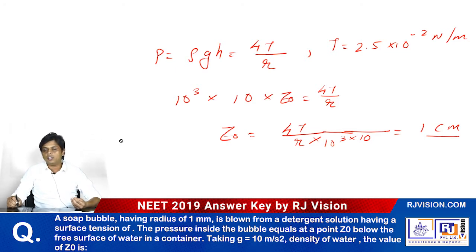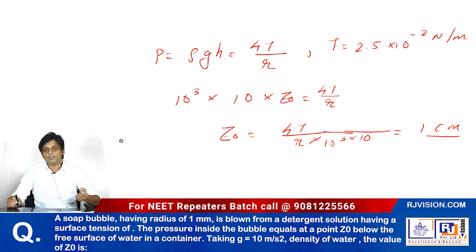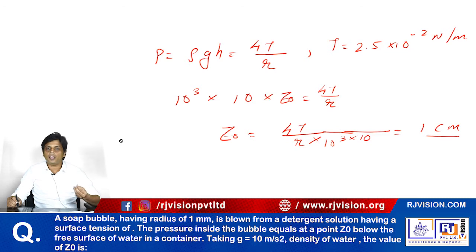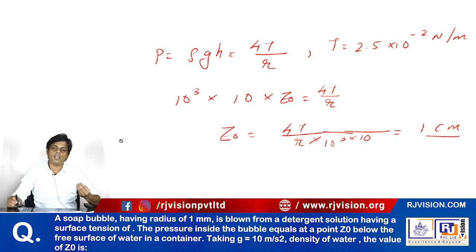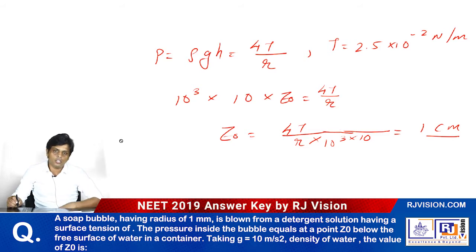The pressure inside the soap bubble is given by the formula 4T/R, because it is a soap bubble. Here, T is the surface tension and R is the radius of the bubble.